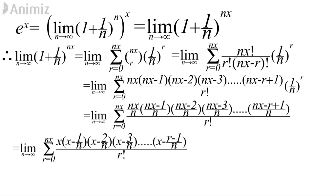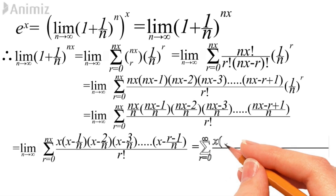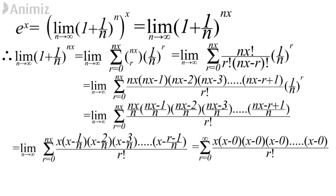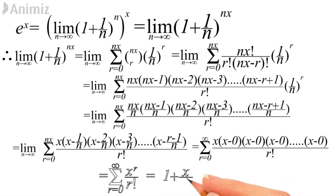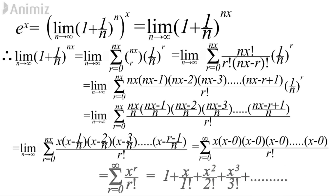Since x is a positive integer, nx ≥ n, and since n tends to infinity, nx also tends to infinity, so the sum goes from r=0 to infinity. Any finite number divided by n tends to 0, so x - 0 = x. We get a product of r x's, and finally Σ x^r/r! from r=0 to ∞, which equals 1 + x/1! + x²/2! + x³/3! + ... up to infinite terms.